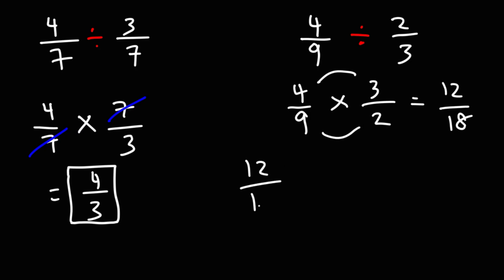Now 12 over 18, we can reduce that. We could divide both numbers by 6. 12 divided by 6 is 2, 18 divided by 6 is 3, and so that gives us the answer 2 over 3.